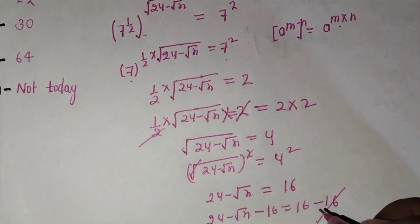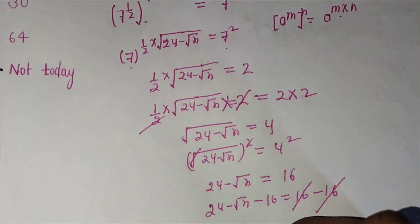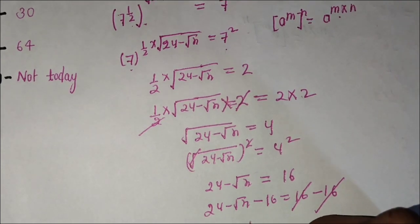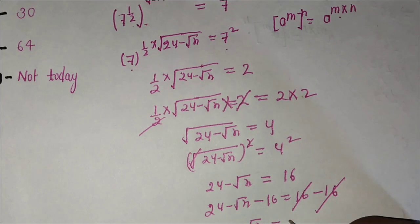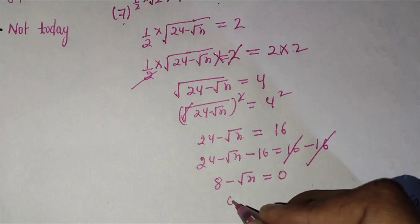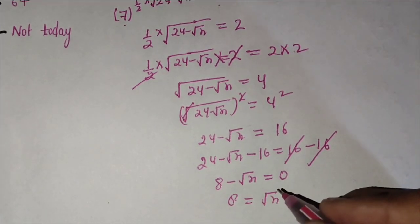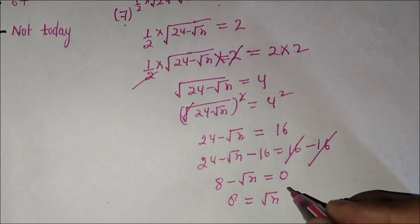24 minus 16 equals 8, so root x equals 8. Now square both sides again to cancel the square root.